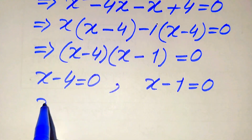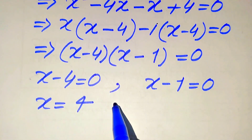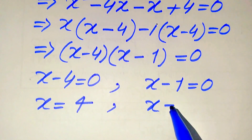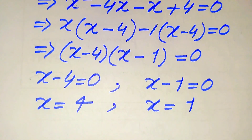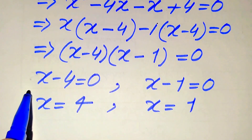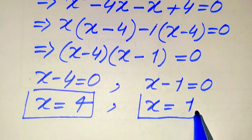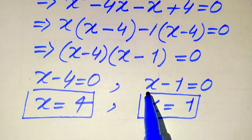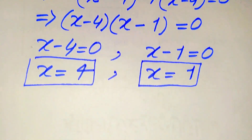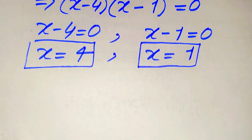From the first case we get x equals 4, and from the second case we get x equals 1. These are the two roots of the given equation. In the next step we need to verify these two roots and check whether they satisfy the original equation or not.